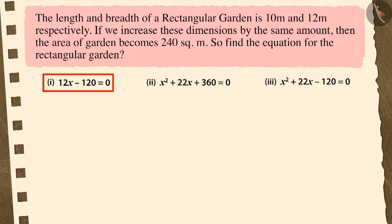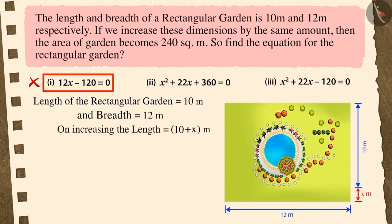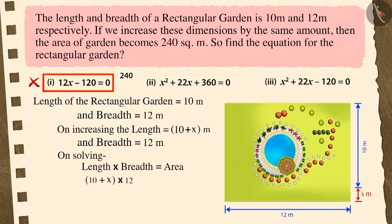If you have selected option 1, then it is a nice try, but this is an incorrect answer. Because we had to make changes in both length and breadth of the garden, whereas you only made change in its length. And on that basis, you solved the question further, because of which your answer is wrong.